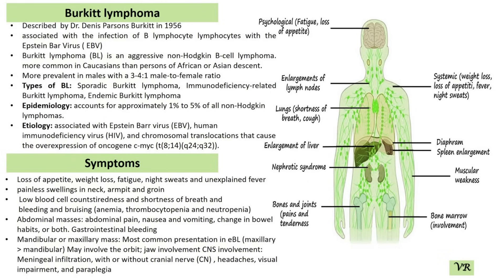Hello. Today I am going to discuss about Burkitt's Lymphoma. Burkitt's Lymphoma was first described by Dr. Dennis Burkitt in 1958, who initially observed the disease in children in Uganda. Burkitt's Lymphoma is a type of aggressive B-cell non-Hodgkin Lymphoma characterized by the rapid proliferation of B lymphocytes.